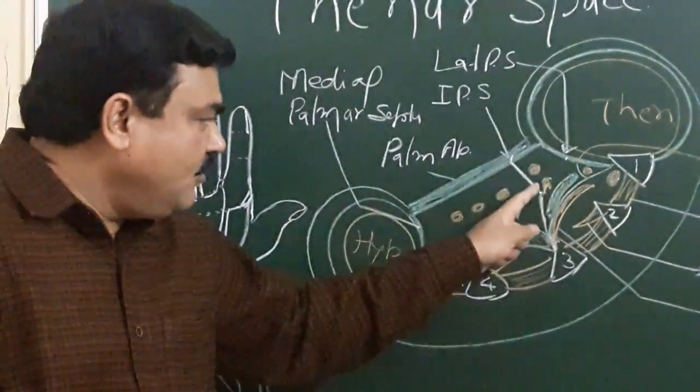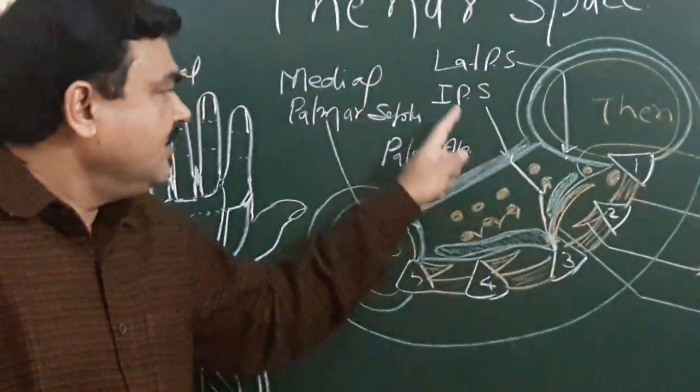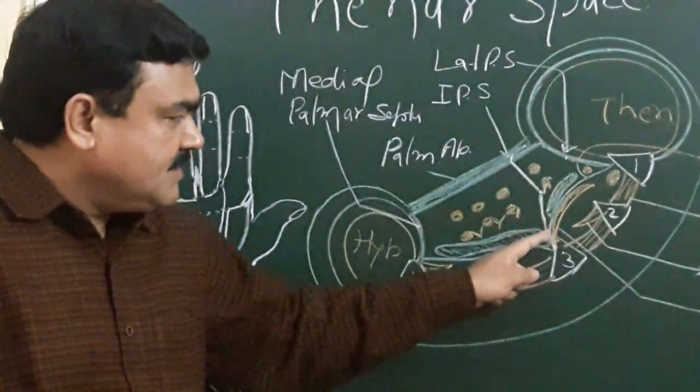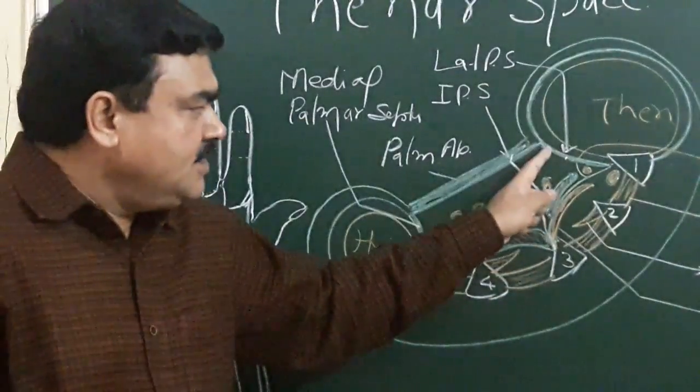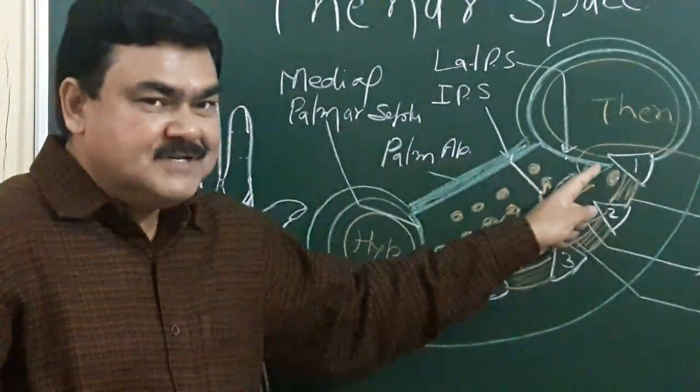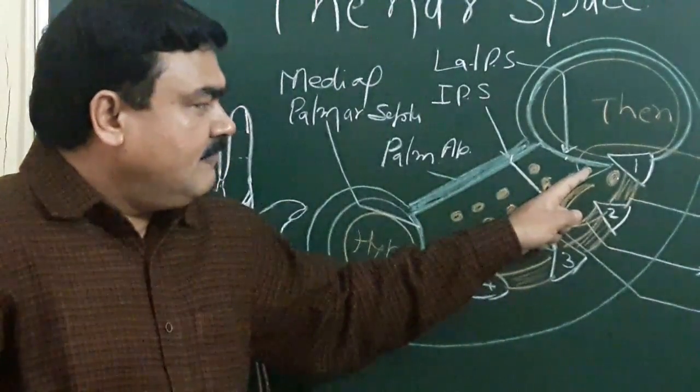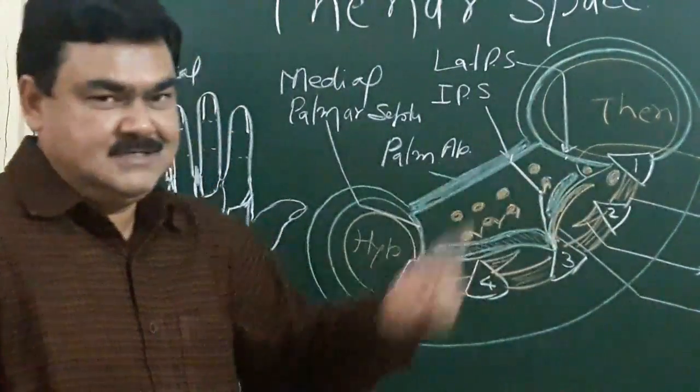And medial boundary, medial boundary is formed by intermediate palmar septum, this is intermediate palmar septum. And lateral boundary is formed by lateral palmar septum, and also tendon of flexor pollicis longus.